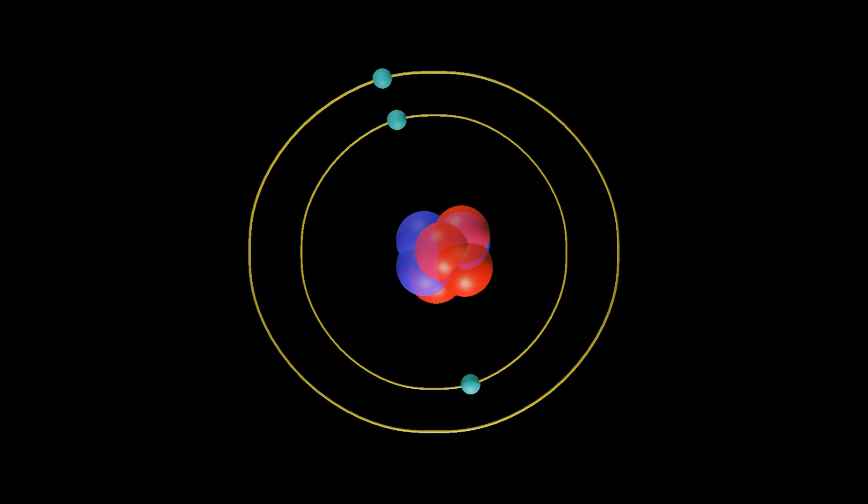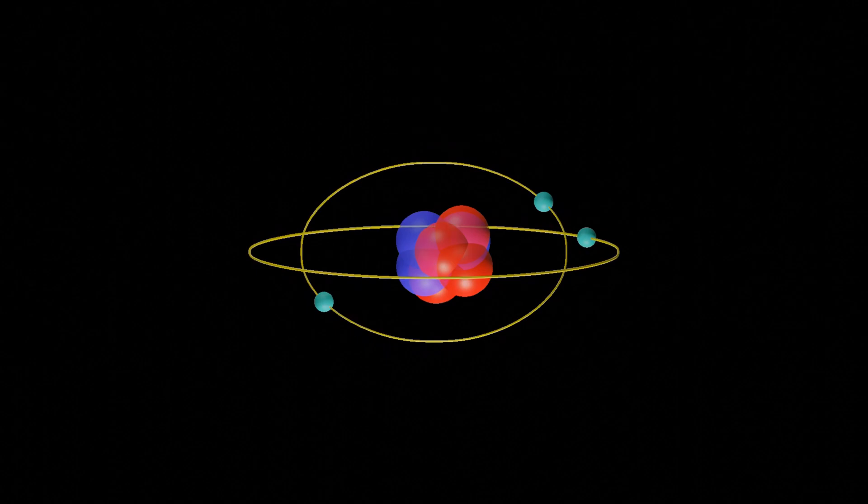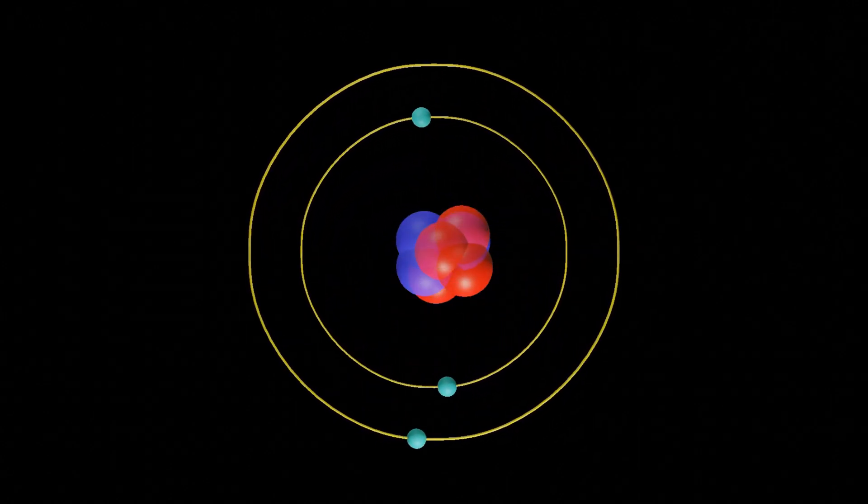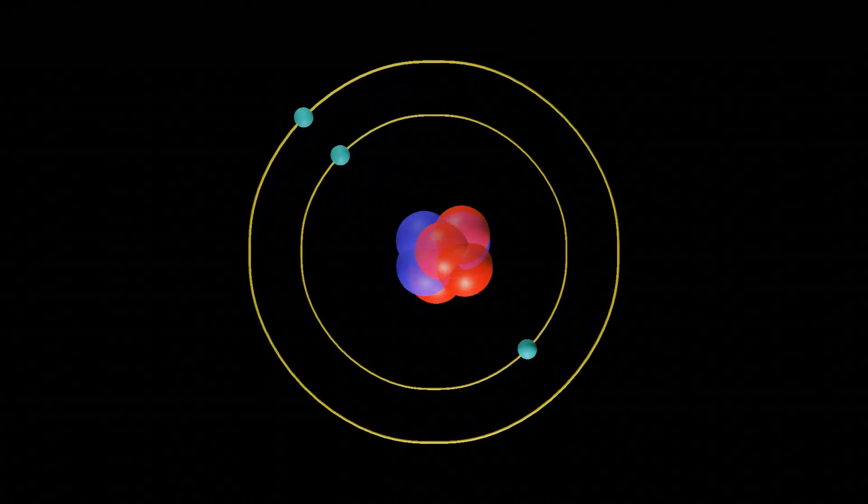The number of protons in the nucleus determines the atomic number and the identity of the element. The number of neutrons in the nucleus can vary, and atoms with the same atomic number but different numbers of neutrons are known as isotopes.